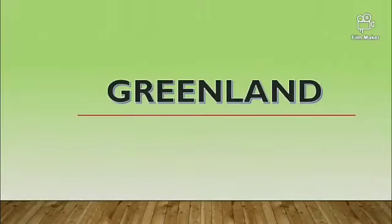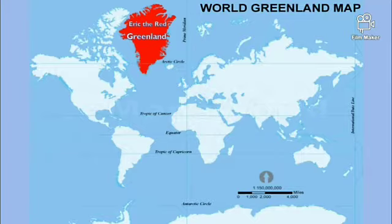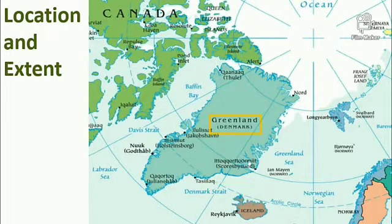Greenland is the largest island in the world but it is not a continent. It is located toward the northeast of North America. Eric the Red discovered this island in the 10th century and named it. Nuuk is the capital of Greenland. Greenland is a self-governed province of Denmark.